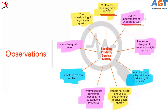Those numbers and terms must be understood well by the people who will actually make the product. Many times, the information is not transferred clearly, correctly, or completely — that's why quality requirements are not understood well. This leads to quality problems and bad quality.